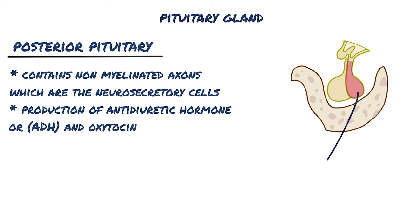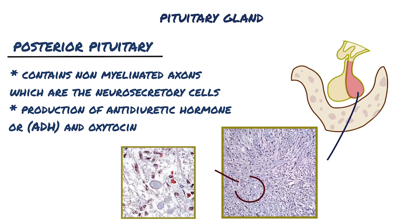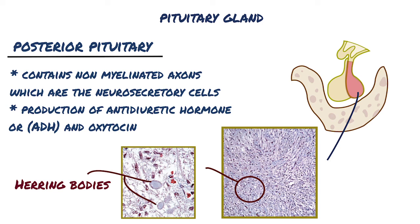Transported axonally, these hormones accumulate in axonal dilations called neurosecretory bodies, or herring bodies. The herring bodies release either oxytocin or ADH, which is carried away by nearby capillaries.